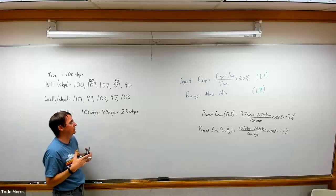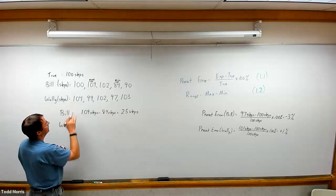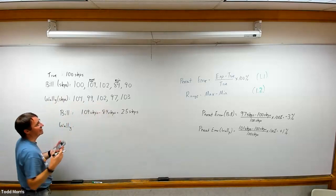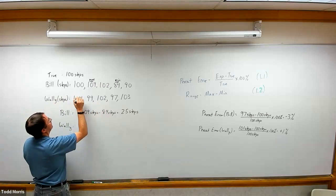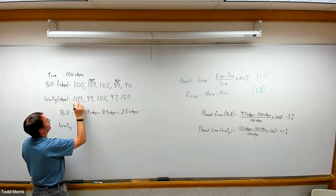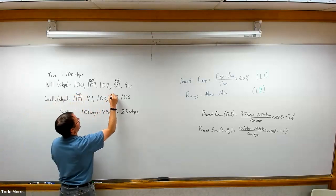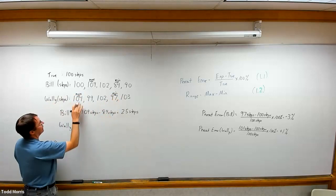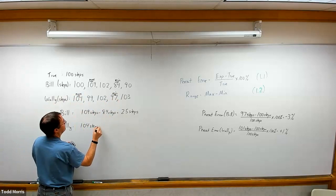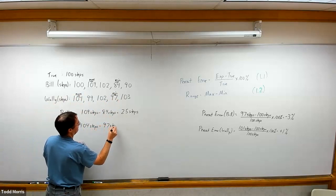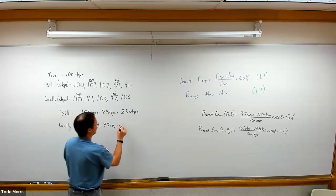Bill's precision was about 25 steps. For Wally's, we'll look at our numbers, find the highest number and also note the smallest numbers. The highest number here is 104, and the smallest value here is 97. So for Wally we'll take our largest number, 104 steps, minus the smallest number, 97 steps.